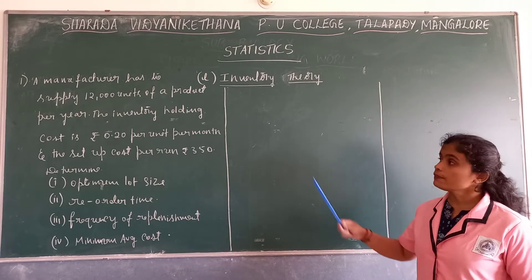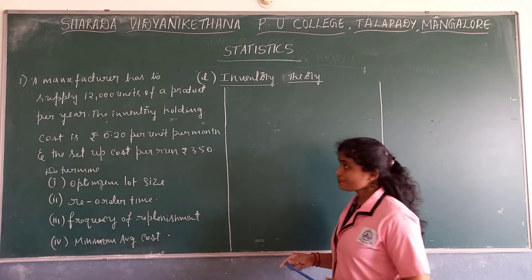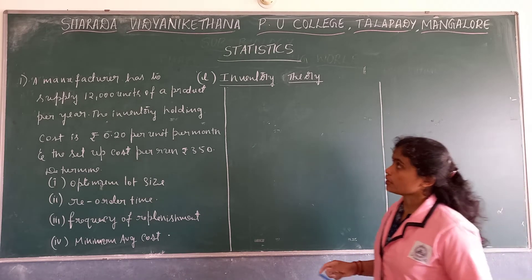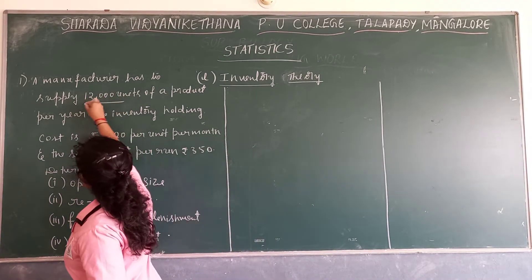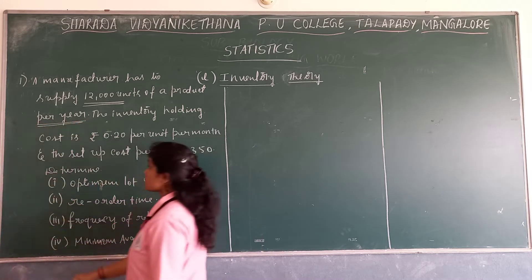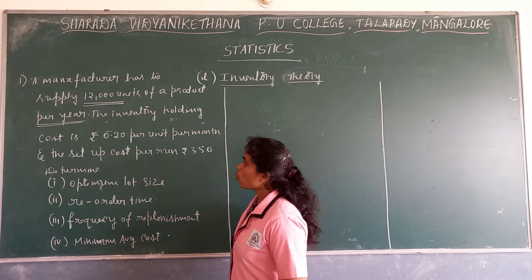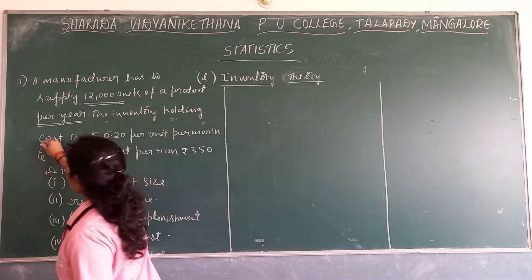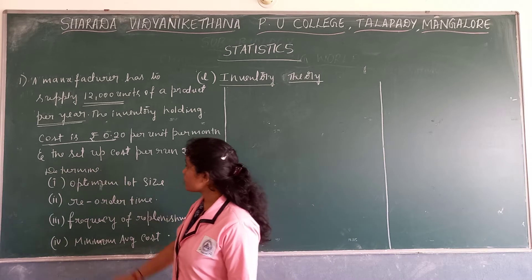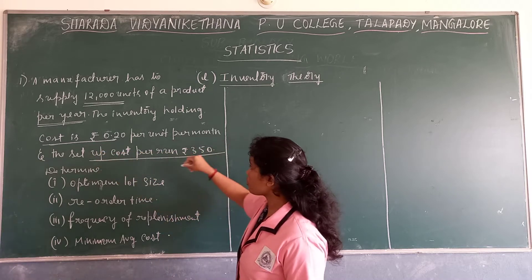Firstly, we need to see the problem. Here we are at the first problem. Read the problem: a manufacturer has to supply 12,000 units of a product per year. You have to always check whether orders are per month or per year — this is per year. The inventory holding cost is Rs. 0.20 per unit per month. The setup cost per run is Rs. 350.